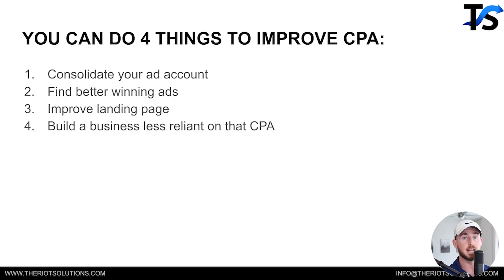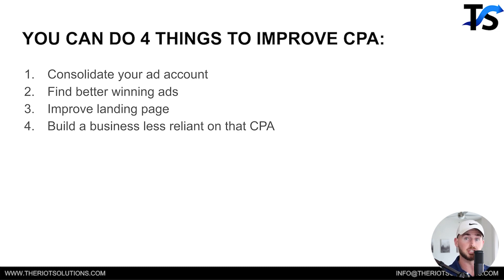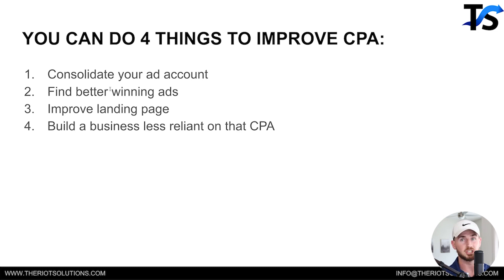There are four specific things that we deploy to improve our CPA. We might deploy all four or we might only deploy one or two, just depending on the situation we're dealing with. These four things are: consolidation of the ad account, finding better winning ads — a never-ending cycle — improving the landing page, also never-ending, and building a business less reliant on that CPA that you need.